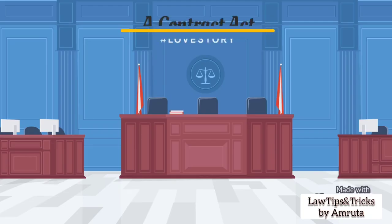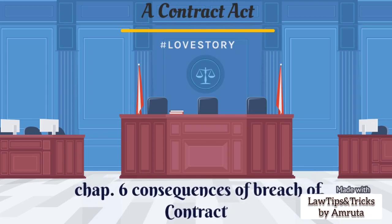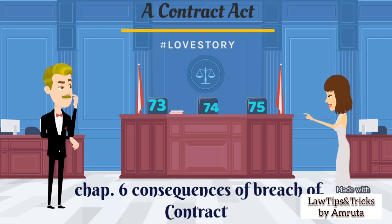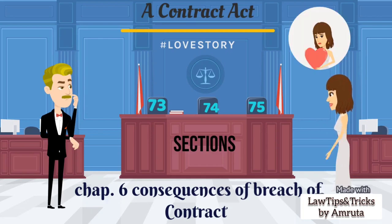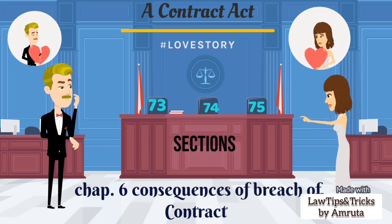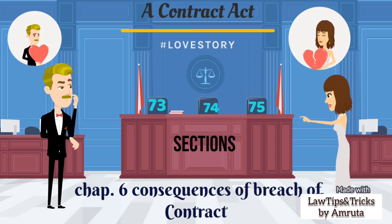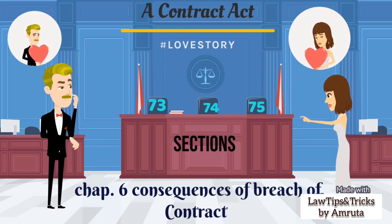Now the last one: Chapter 6, Consequences of Breach of Contract, from section 73 to 75. What is breach? Breach means break up. As we all know, they started hating each other, so they decided to break up. And the consequences are like compensation and damages — the boy has to compensate for any loss or damages to the girl in court. So that is the Consequences of Breach of Contract. And here ends the contract, and the love story also ends.